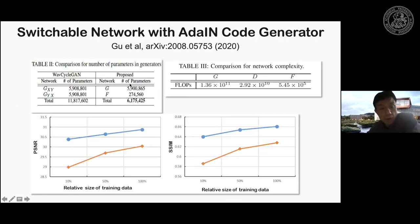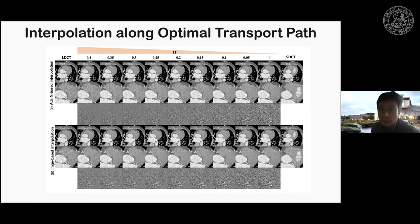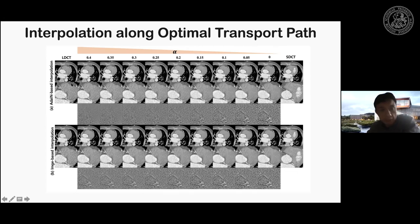The AdaIN encoder has a negligible number of parameters and FLOPs compared to the main generator — this gives a much lighter neural network architecture. With smaller training data, the performance degradation in PSNR and SSIM is small, whereas the standard cycle GAN shows more performance degradation with fewer training samples. Another nice property of the switchable cycle GAN is that you can generate interpolated images along the optimal transport path. Since AdaIN is essentially optimal transport between two i.i.d. Gaussian distributions, interpolating between the two codes generates images along the optimal transport path.